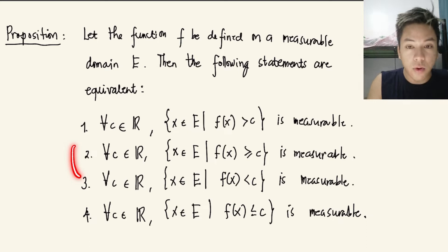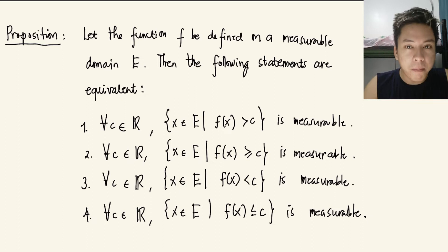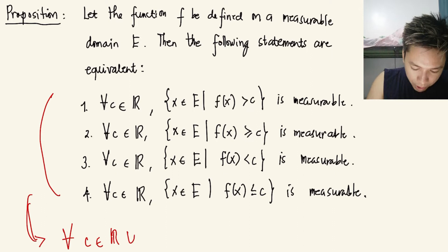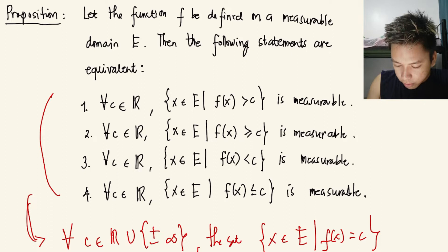We have the set of x in e such that f(x) is greater than c, or it could be greater than or equal to c, it could be less than c, or it could be less than or equal to c — and they're all measurable. Each of these statements from 1 to 4 implies that for all c in ℝ ∪ {±∞}, the set of x in e such that f(x) equals c is measurable.